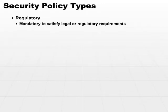The next type of policy is the advisory policy. This is a policy that, once we've covered all the legal and regulatory bases, an organization can come back and say these are the things which we require of our employees, contractors, and people with whom we do business.